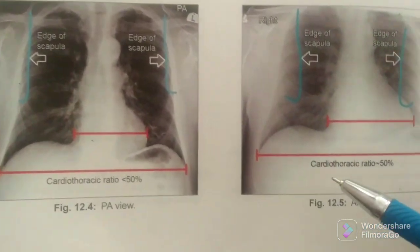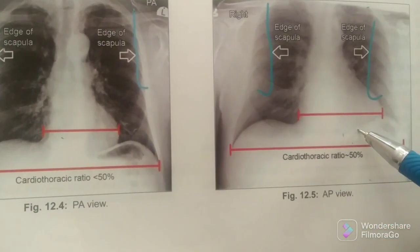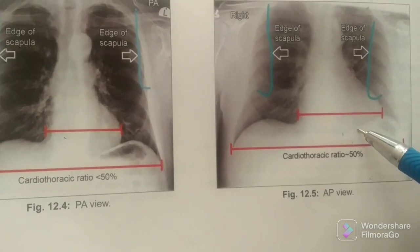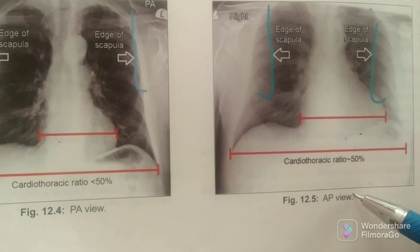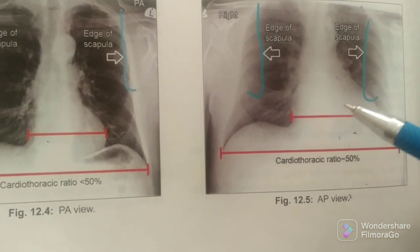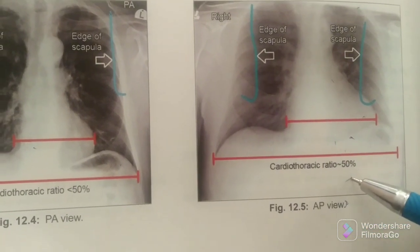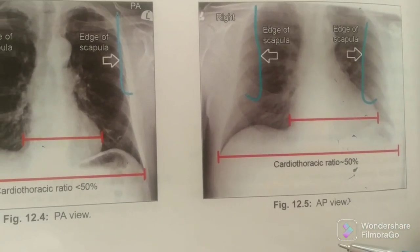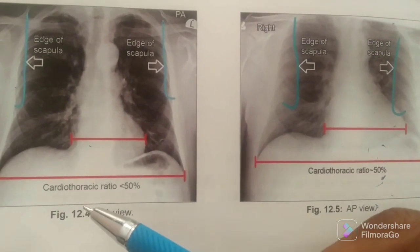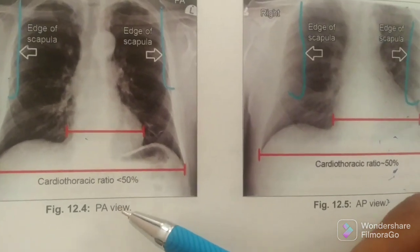The fourth thing is apparent cardiomegaly, which is seen in the AP view. This is because of the distance at which the projector and patient are placed — 40 inches in the case of AP view — so there is apparent cardiomegaly, and the cardiothoracic ratio (CTR) comes out to be more than 50%. Whereas in PA view, there is no apparent cardiomegaly and CTR is less than 50%.